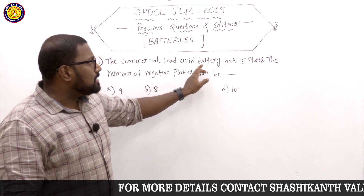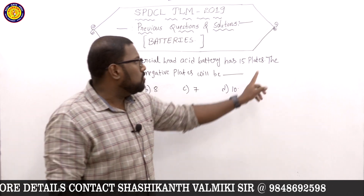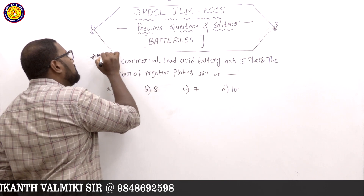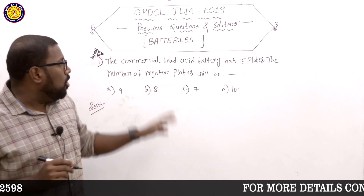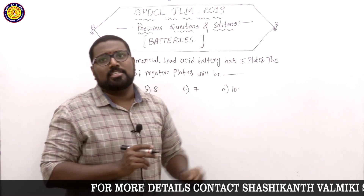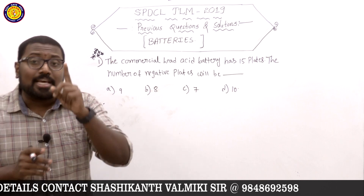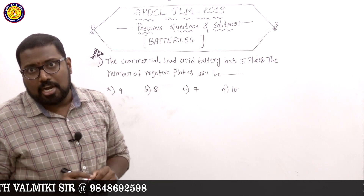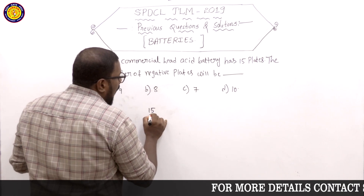First question: The commercial lead-acid battery has 15 plates. What is the number of negative plates? This question is very important and repeated in many exams. Basically, we have 15 plates in a lead-acid cell battery. We know that a battery has two types of plates — positive or negative.